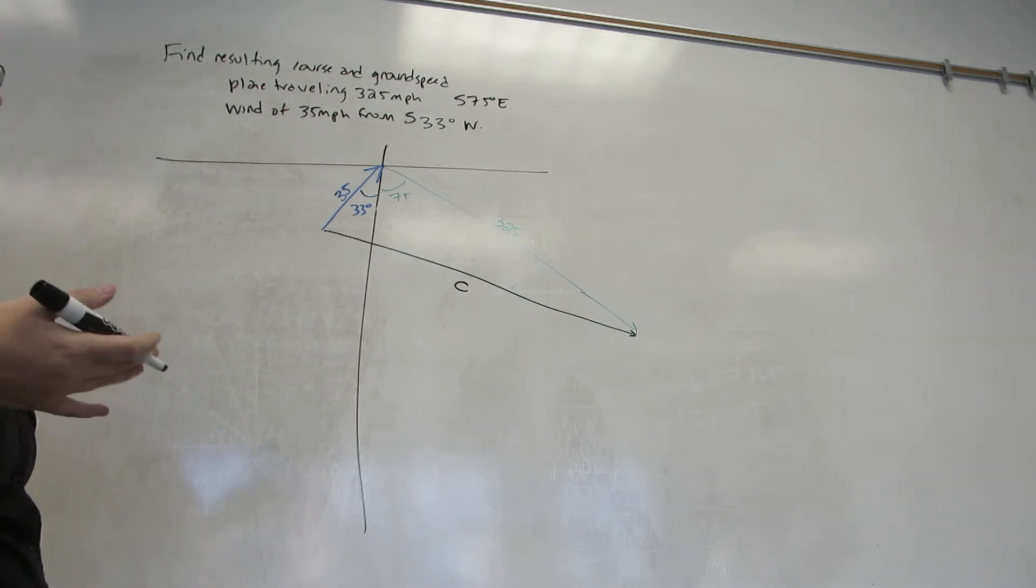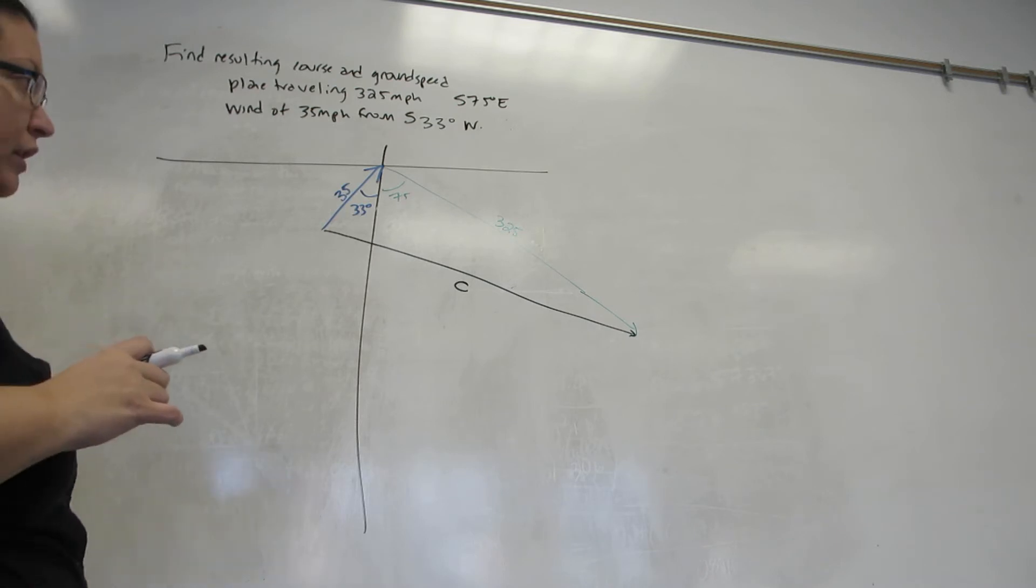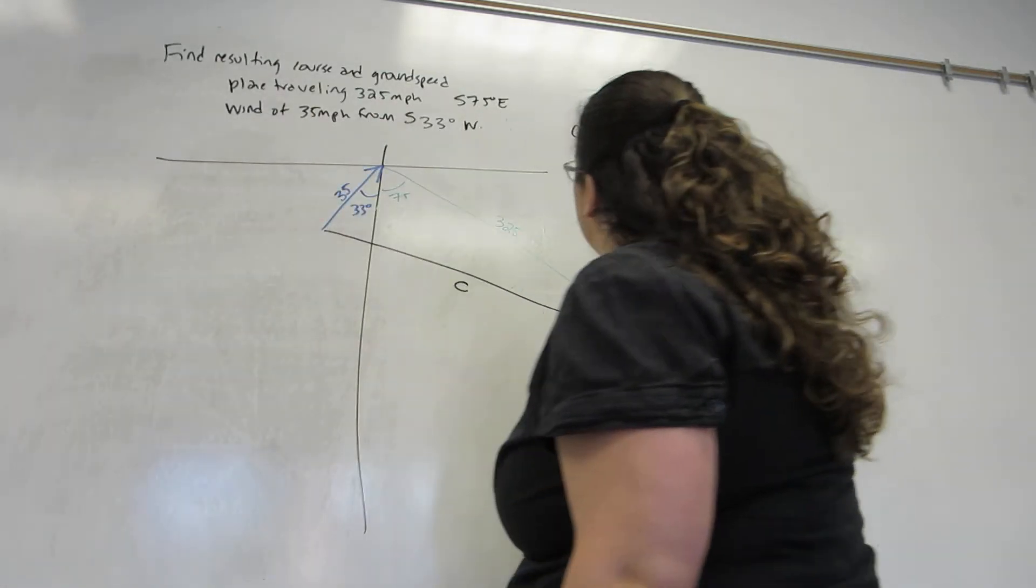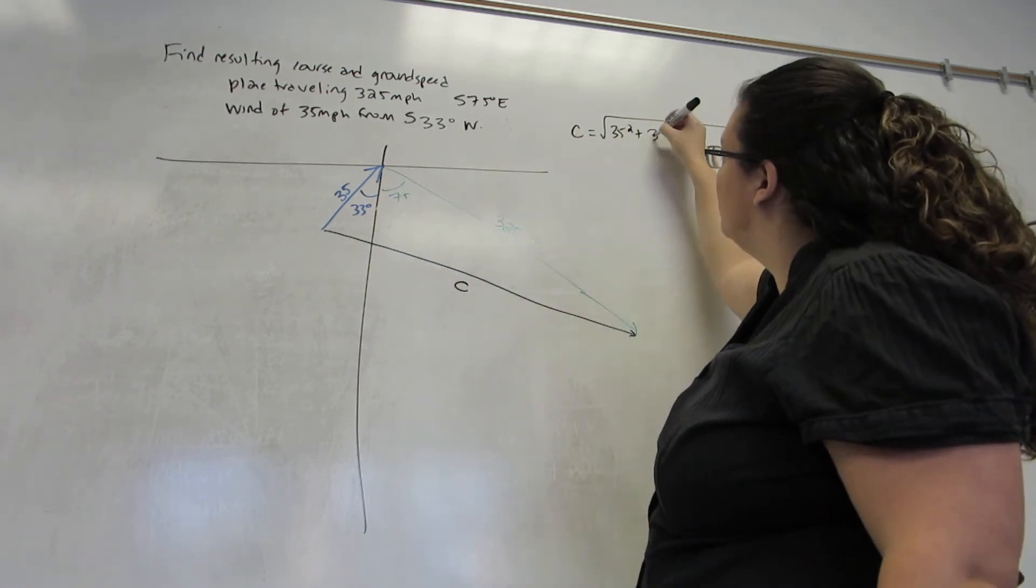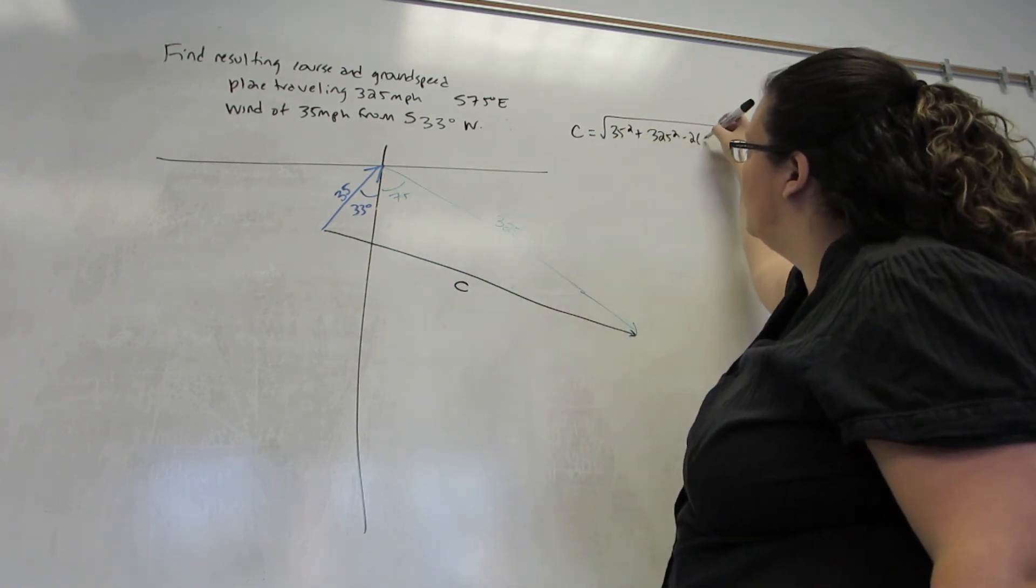And the first thing is to actually find the length of that vector, which was not given to us as it was in the previous example. You always are going to use law of cosines for this. So C will be the square root of 35 squared plus 325 squared minus twice...